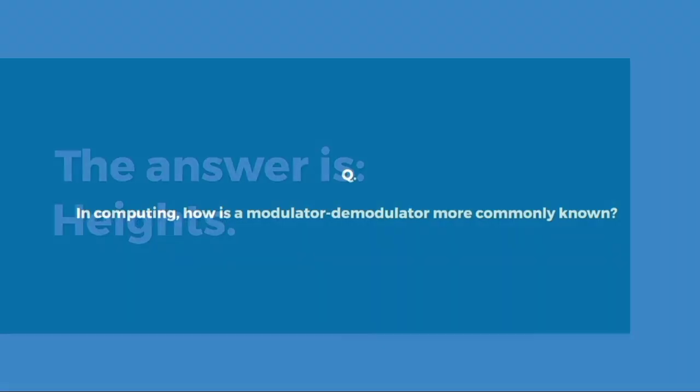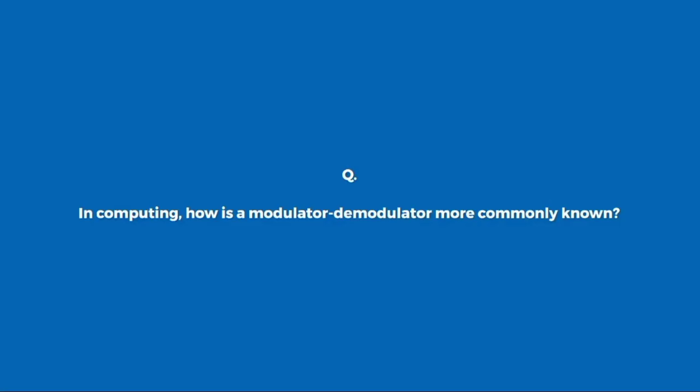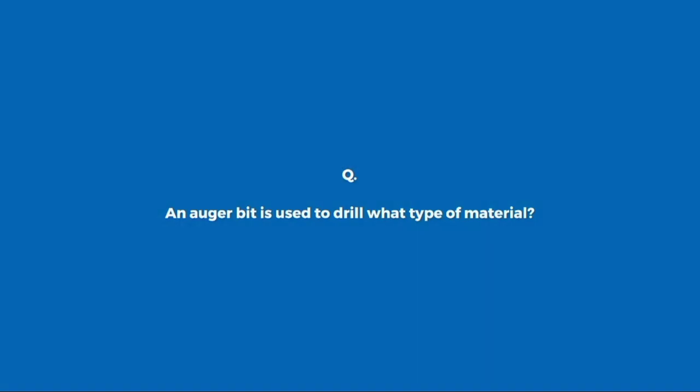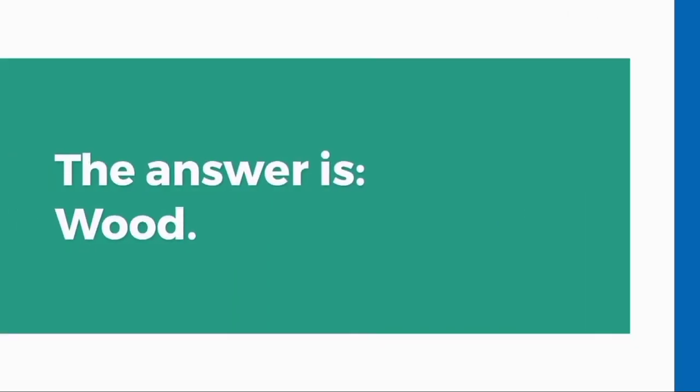In computing, how is a modulator-demodulator more commonly known? Modem. An auger bit is used to drill what type of material? Wood.